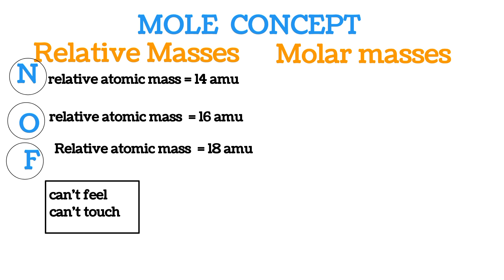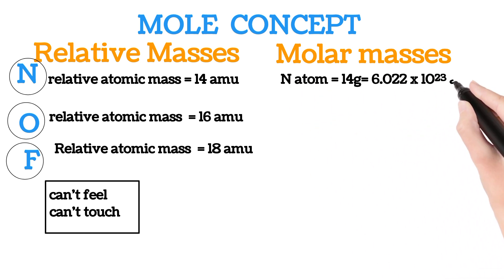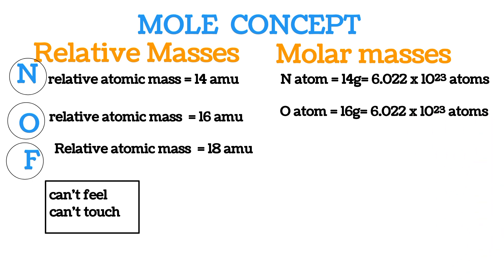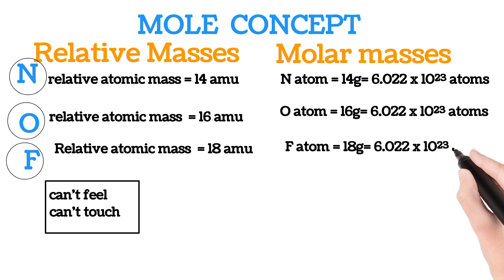That brings us to the concept of molar masses. The molar mass of nitrogen is 14 grams, and that is equivalent to 6.022 × 10²³ atoms of nitrogen. The molar mass of a single oxygen atom is 16 grams, and this is equivalent to 6.022 × 10²³ atoms of oxygen. The molar mass of a fluorine atom is 18 grams, and this is equivalent to 6.022 × 10²³ atoms of fluorine.